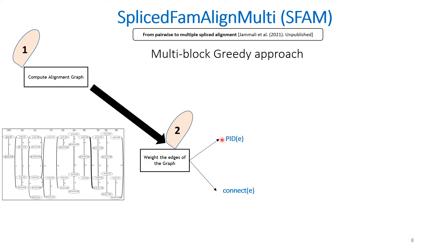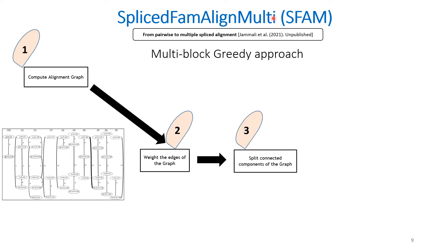Those scores are the PID of E, where E stands for edge, and the Connect of E. The PID of E is the percent sequence identity of the pairwise alignment represented by the edge. Connect E evaluates the strength of the connectivity between the two vertices connected by the edge. The third step of our method is to sleeve the connected components of the graph. This step is important because a multi-block must contain at most one segment of each sequence. A connected component containing two non-overlapping segments of the same sequence cannot represent a multi-block. As a result of this step, we will get a new graph.